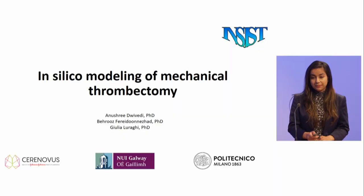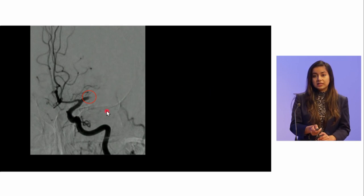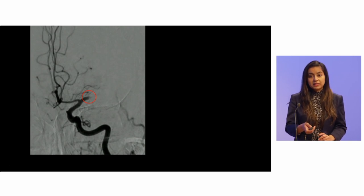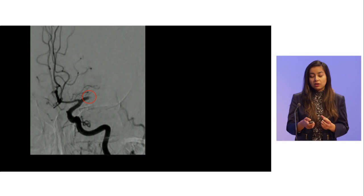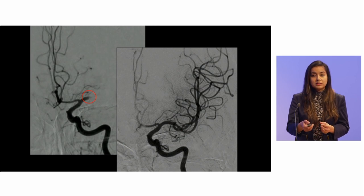Today I'm going to talk about in silico modeling of mechanical thrombectomy. Here is a scan of a patient's brain showing different vessels. In the red circle you can see there is a blockage in the brain formed by a clot, and because of that blockage the vessels downstream are blocked as well, deprived of blood supply. We perform a procedure called mechanical thrombectomy to remove the clot, and once the clot is removed, blood in the other vessels is restored and the patient is able to live normally if the vessel occluded is fully cleared.